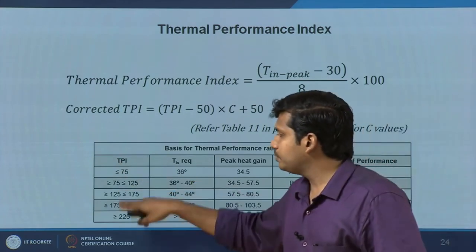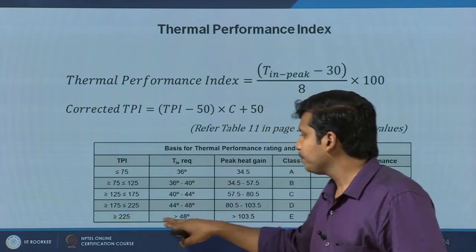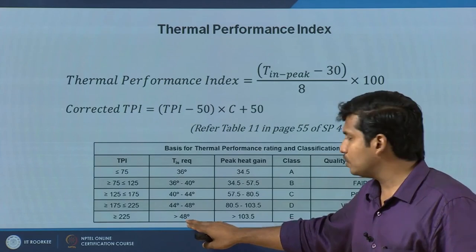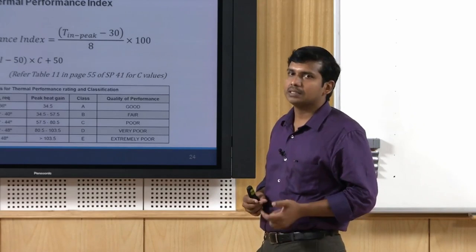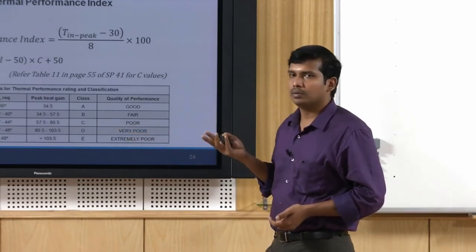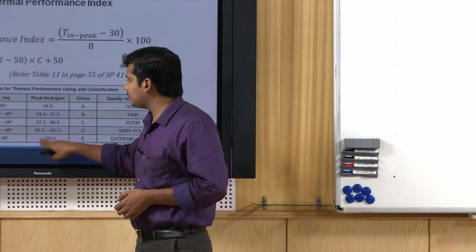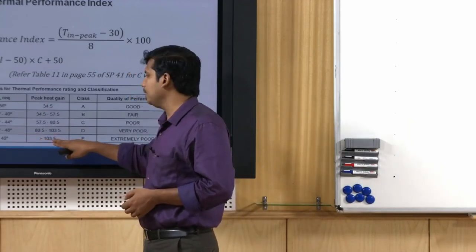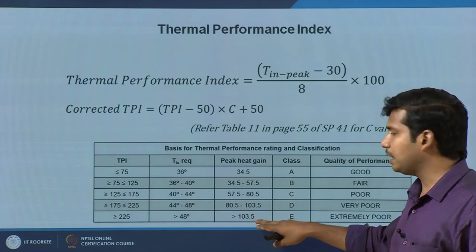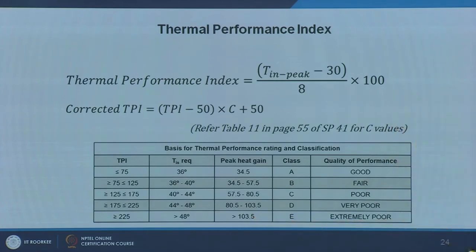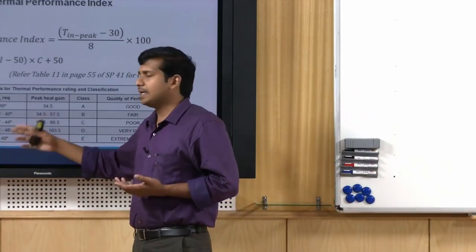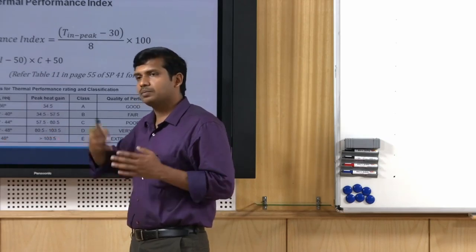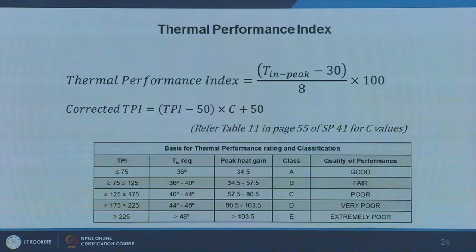If TPI is greater than 225, the inside surface temperature goes above 48 degrees. Touching the wall inside it would reach 48 degrees or above — really uncomfortable. As a consequence, heat gain exceeds 103.5 watts per meter square, which is extremely poor. A thin metal sheet, for example, may reach inside peak surface temperature of 50 to 52 degrees, outside much higher — an extremely poor thermal classification.